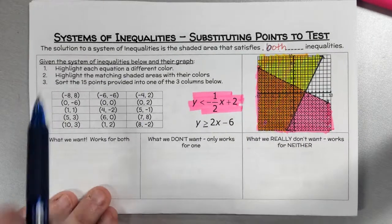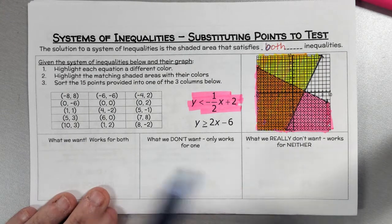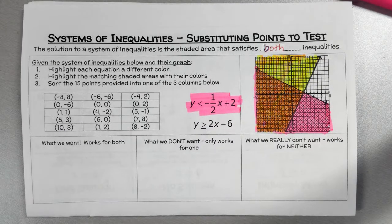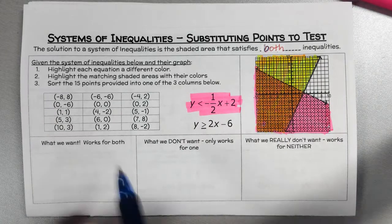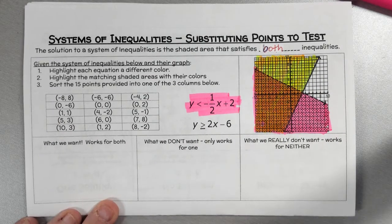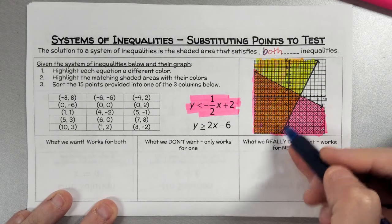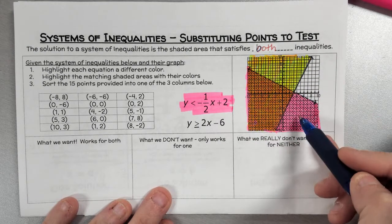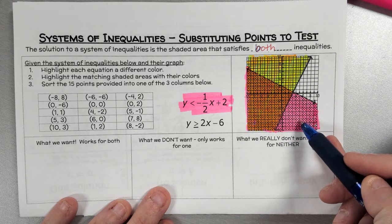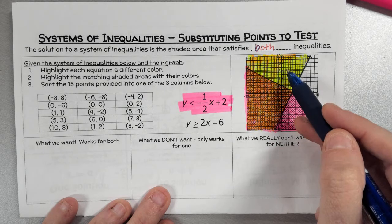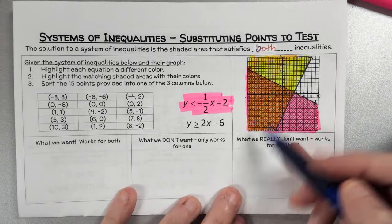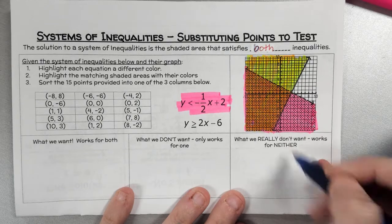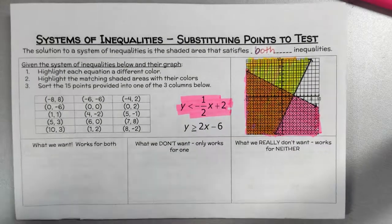Now I want you to take these 15 points and plot them on the grid. Sort them into: the double-shaded area or on a solid line bordering the double-shaded area, meaning it works for both; or in only one shaded area, working for just one; or outside both areas, working for neither. Go ahead and pause the video to do that.